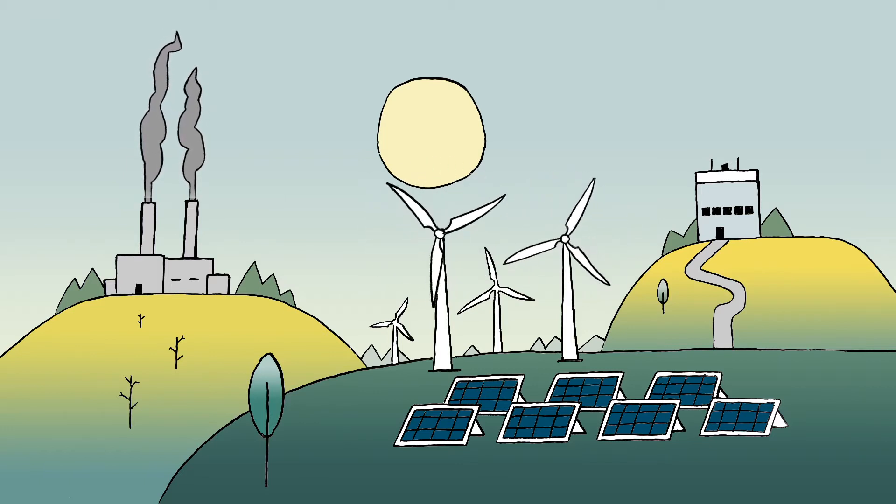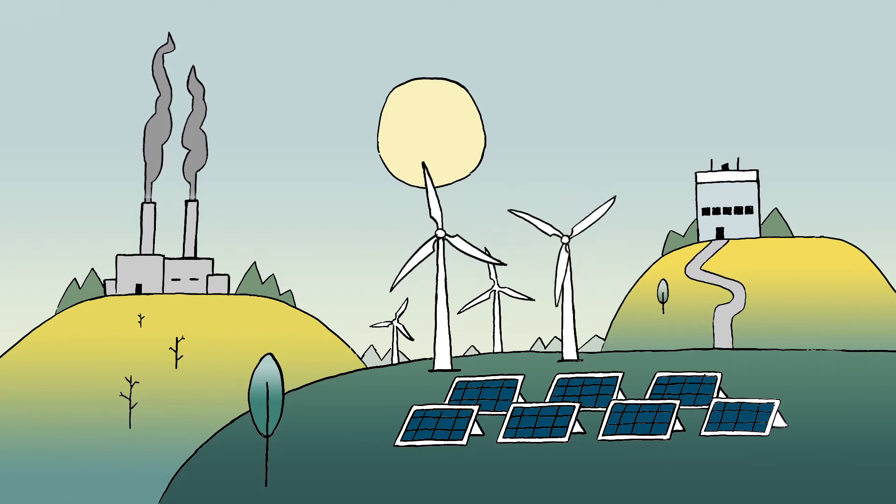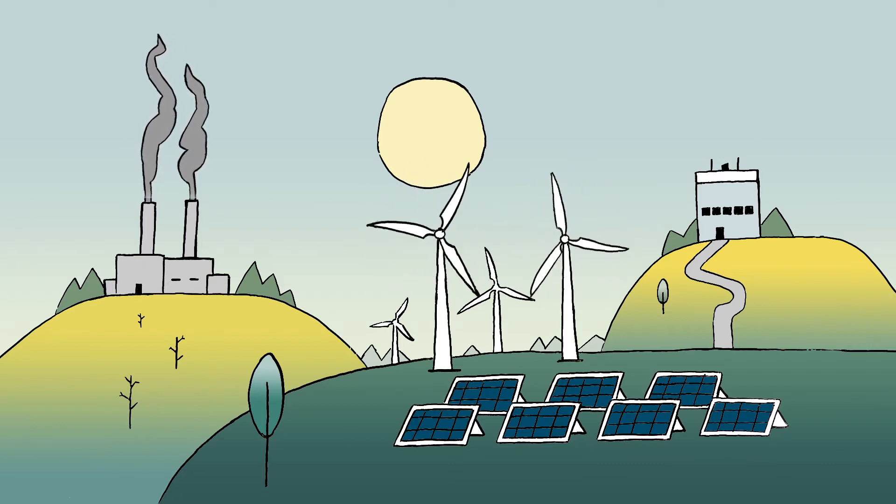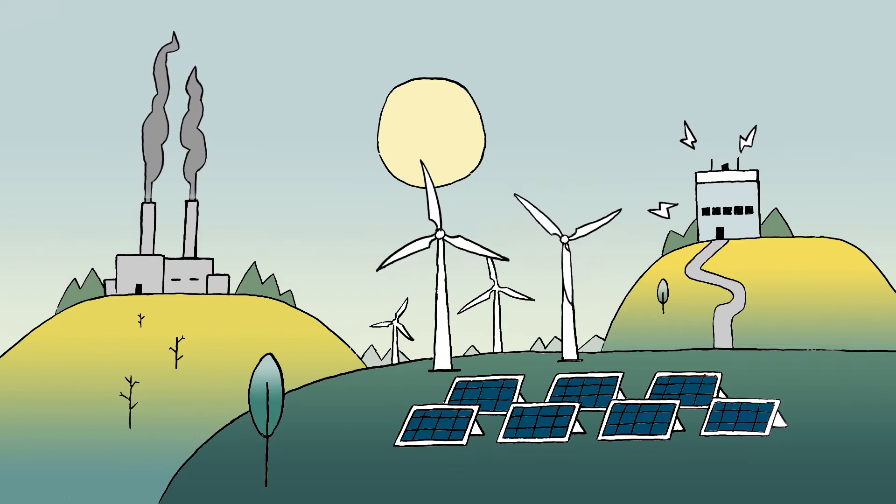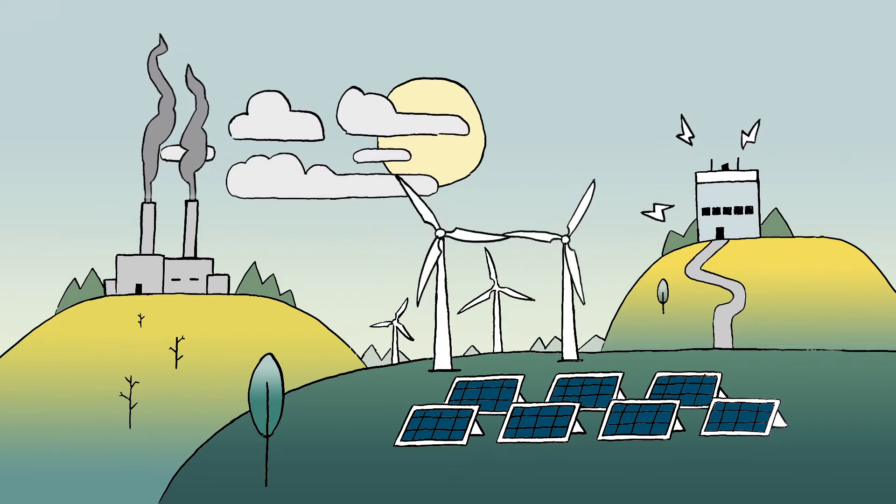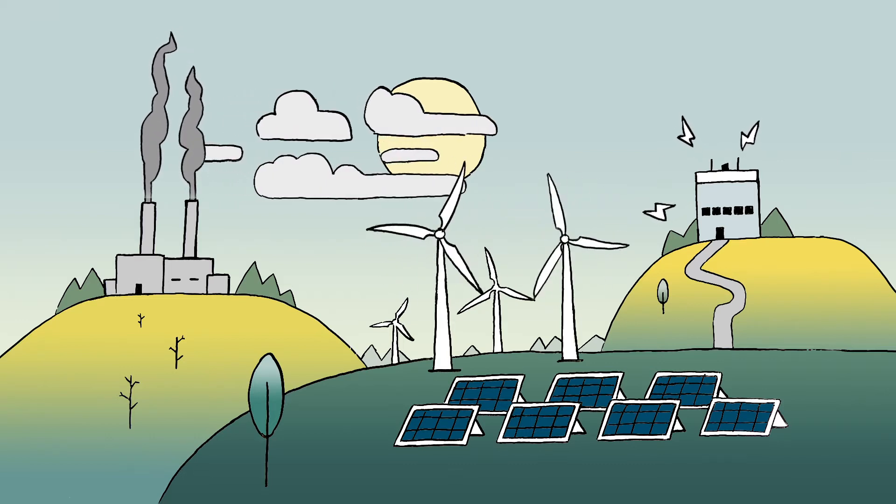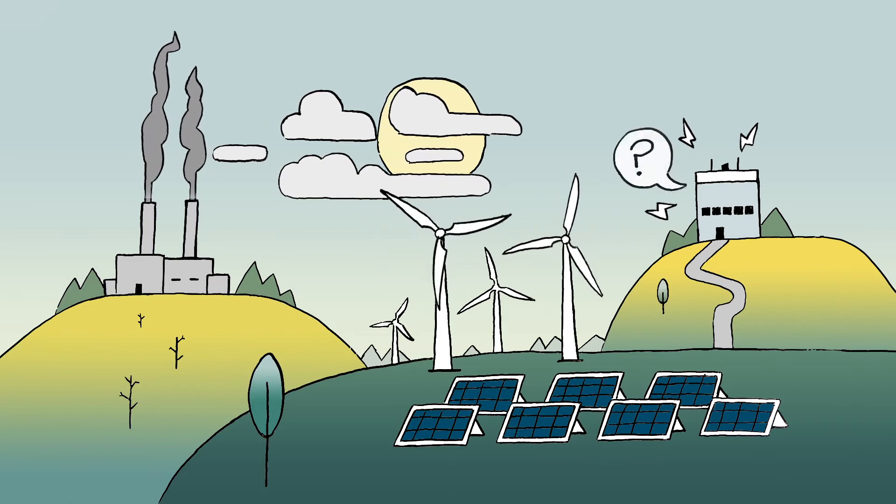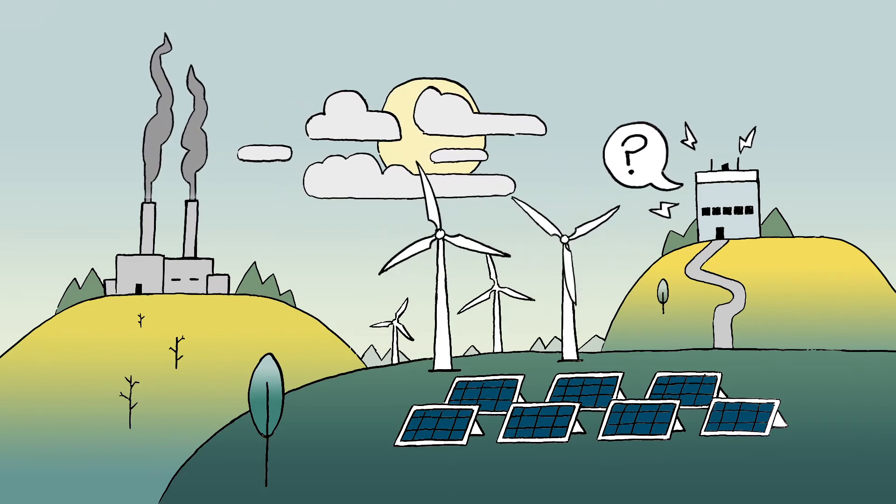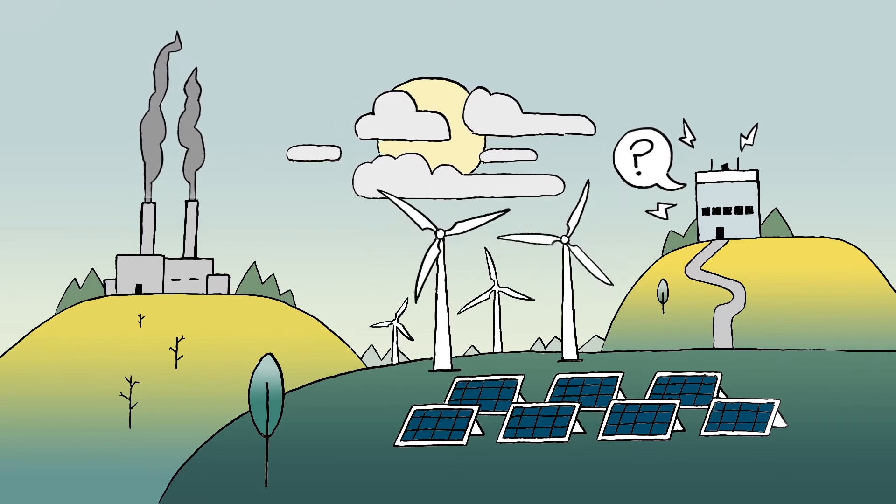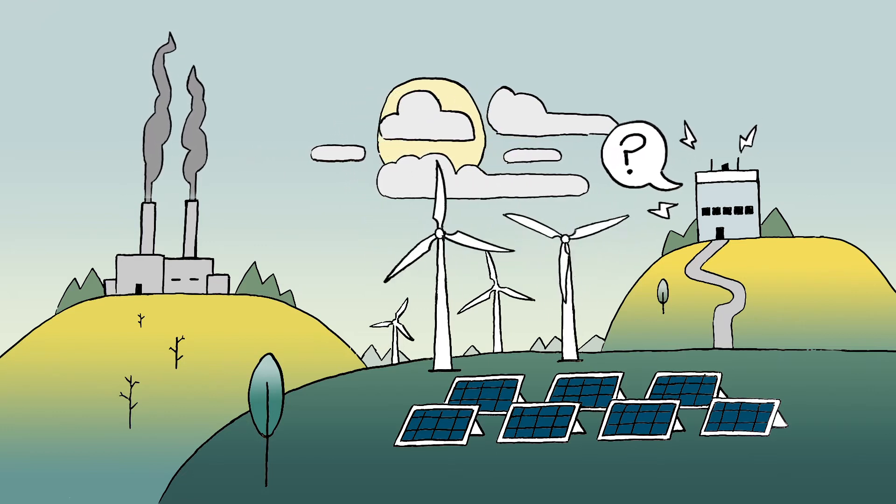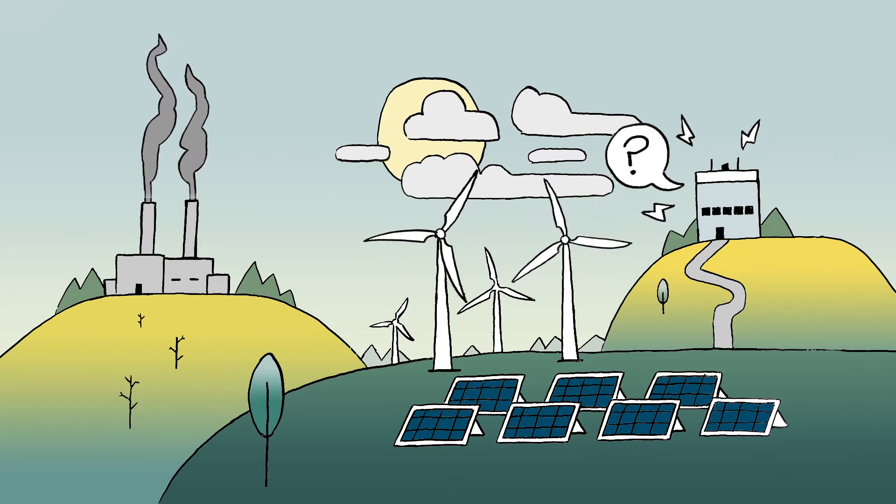But sometimes, like during peak power demand hours when the entire family is home cooking dinner, watching TV, and playing video games, the weather doesn't always cooperate. The wind slows or clouds obscure the sun, and Mark's energy output is dependent on the sun and the wind. During times like those, renewable output may not be able to meet demand, making Mark's job harder and reducing energy sold to the grid.